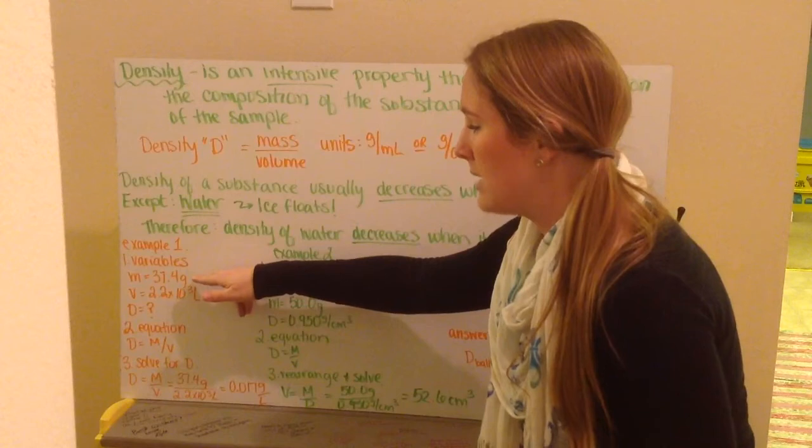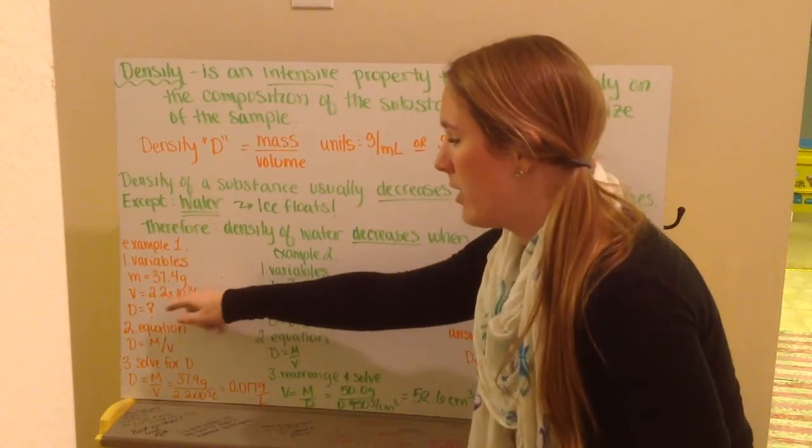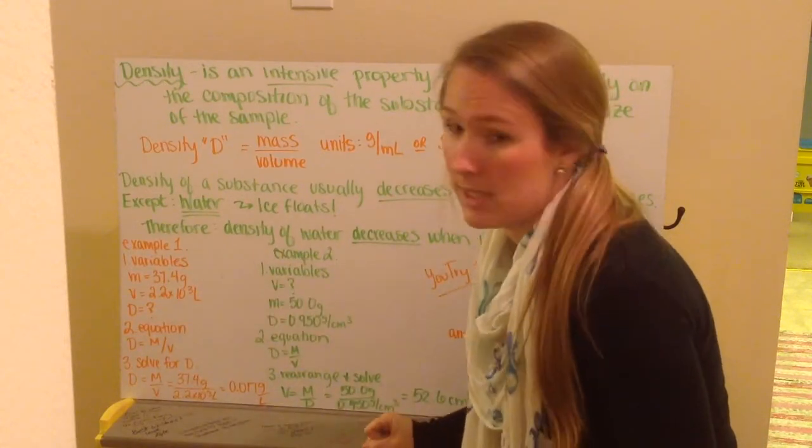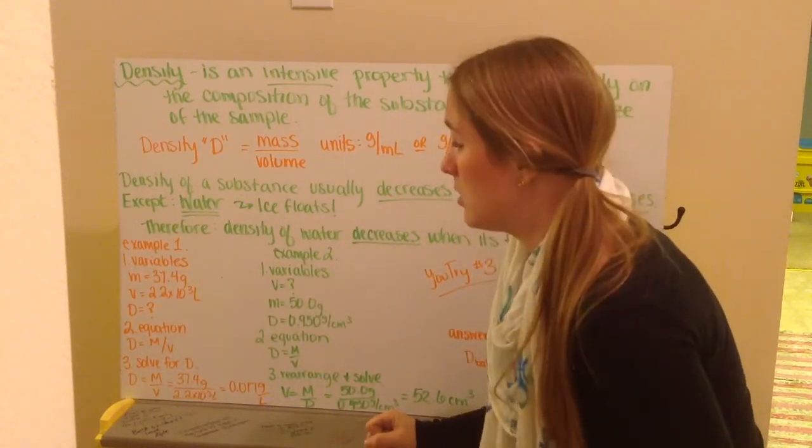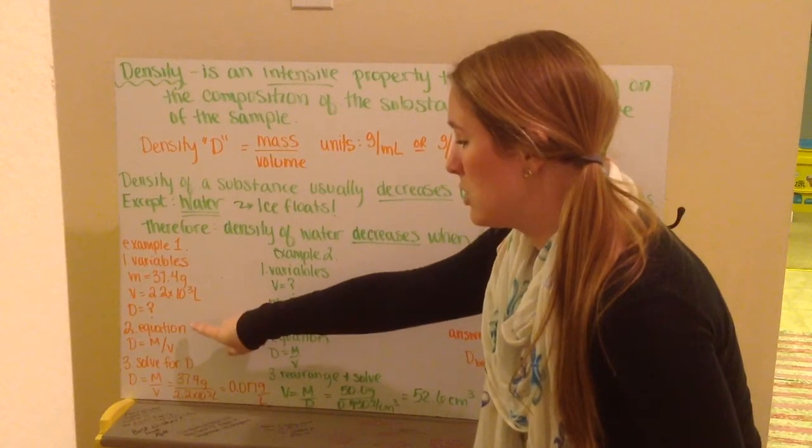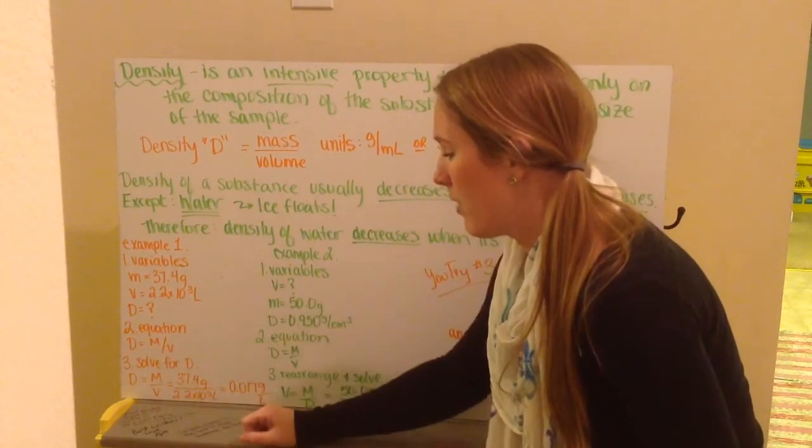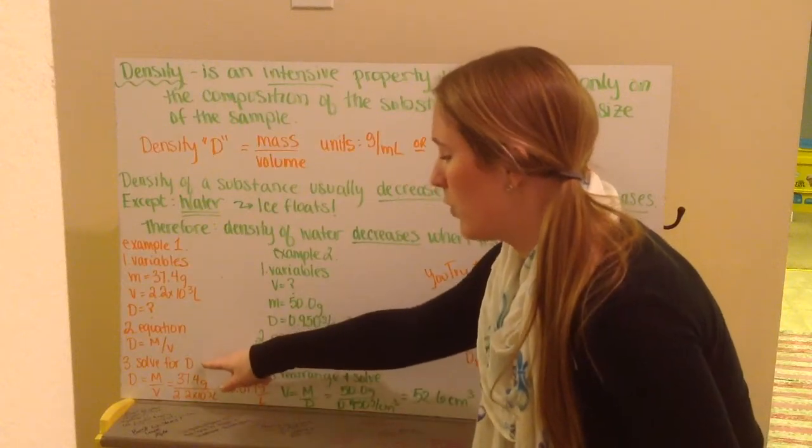We always want to write down our variables that are given to us. We know that our mass is 37.4 grams. Our volume is 2.2 times 10 to the third liters. And we're looking for density. The next thing that we're going to do is we want to write down our equation. Our equation for density is density is equal to mass divided by volume.